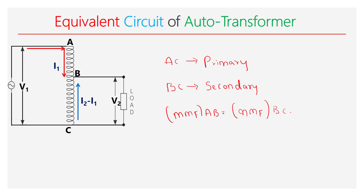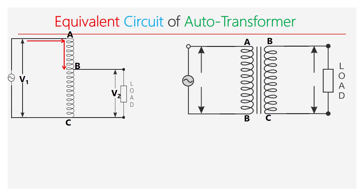The autotransformer is represented in the form of a two-winding transformer, as there exists a transformer action between the winding AB and BC. Here AB acts as the primary winding and BC acts as the secondary winding. The voltage across the winding AB is equal to V1 minus V2, which is the voltage shown across section AB. Similarly, the voltage across BC is equal to V2, and the same voltage is shown across the secondary winding.